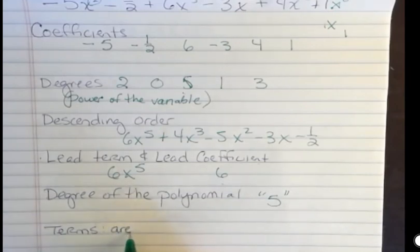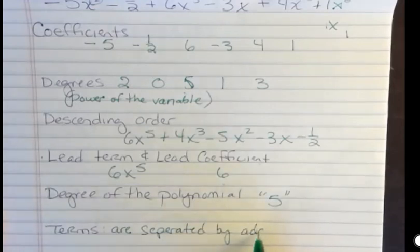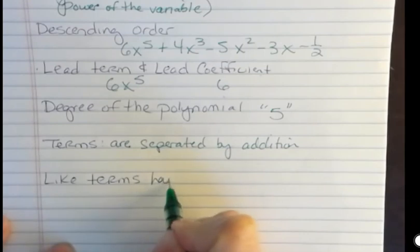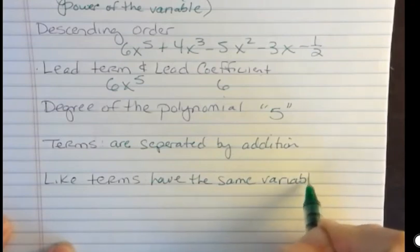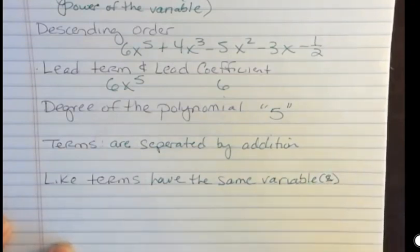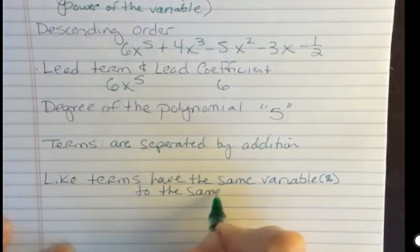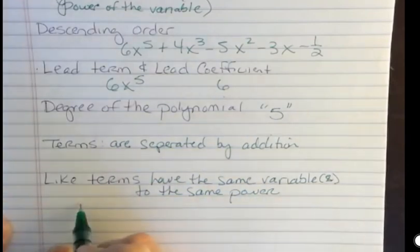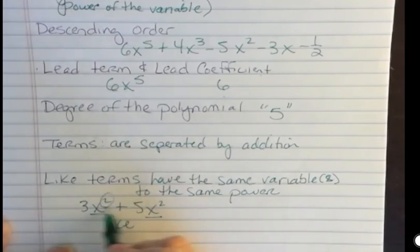Terms are separated by addition or subtraction, but any subtraction can be rewritten as an addition. And like terms have the same variable or variables. We could have more than one in there. Variables to the same power. For instance, 3x squared and 5x squared are like terms because they both have x to the second power. That makes them like terms.